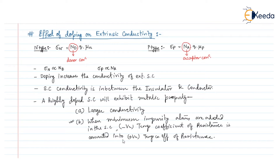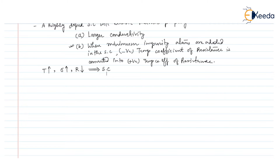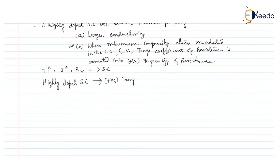For a semiconductor material, as temperature increases, conductivity increases, meaning the resistance decreases — this is the negative temperature coefficient of resistance. But when a semiconductor material is highly doped, it will behave as a metal, and for that case it will have a positive temperature coefficient of resistance.